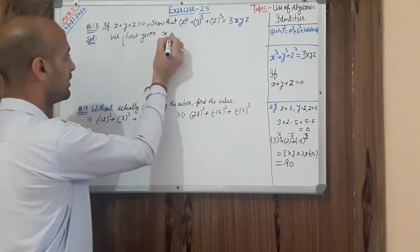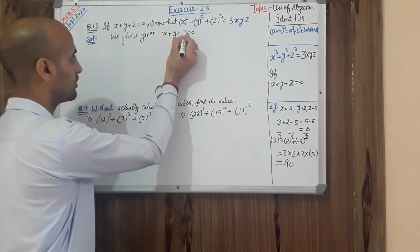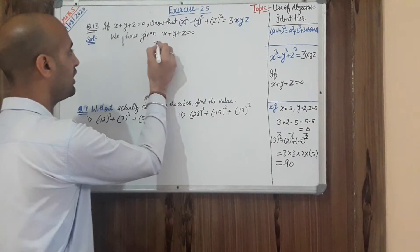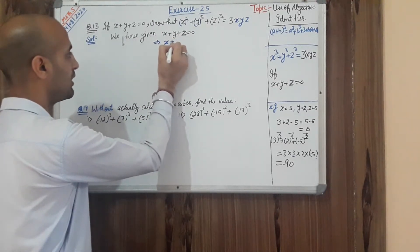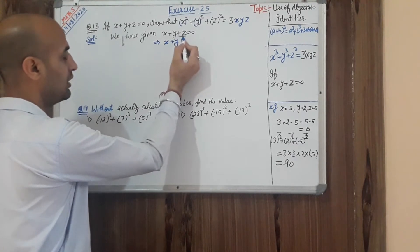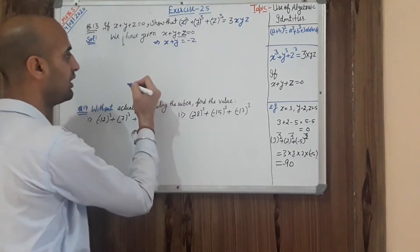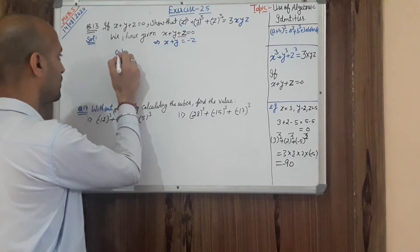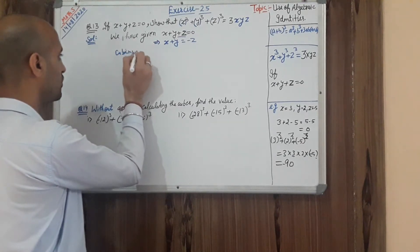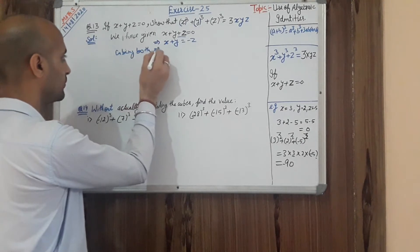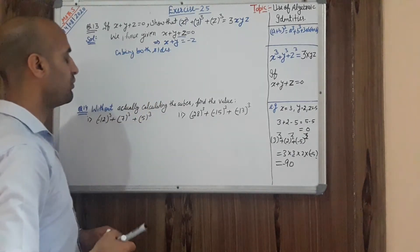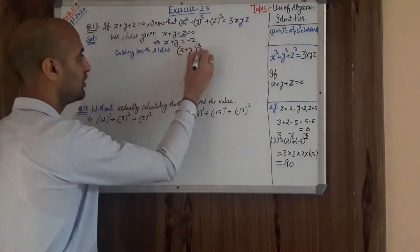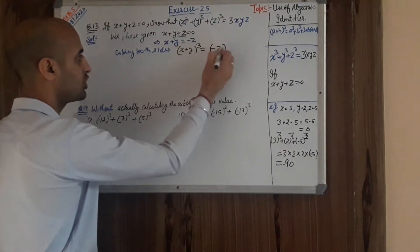Given: x + y + z = 0. From this, if we shift z to the right side, it becomes x + y = -z. Now we need to cube both sides, giving us (x + y)³ = (-z)³.